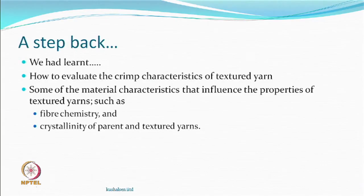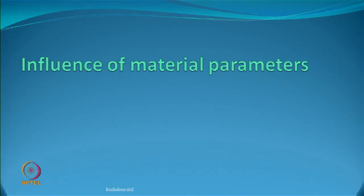We get to Lecture 8, which is on the influence of material and process parameters. Taking a step back, we learned how to evaluate the crimp characteristics of textured yarn, and we discussed some material characteristics that influence the properties of textured yarn, such as fibre chemistry and crystallinity of the parent and textured yarns. We continue with these material parameters and see what kind of influence they can have.